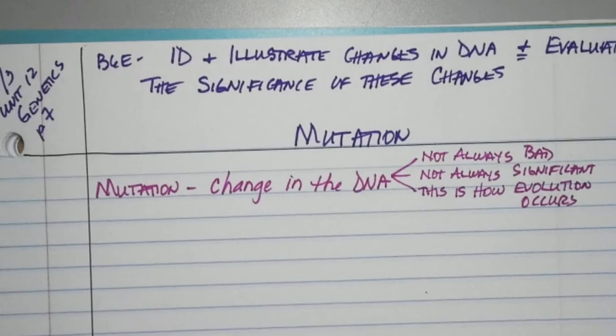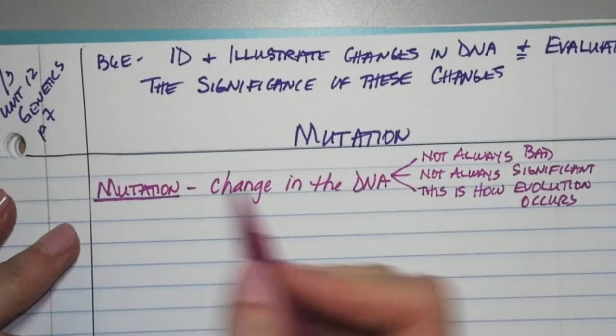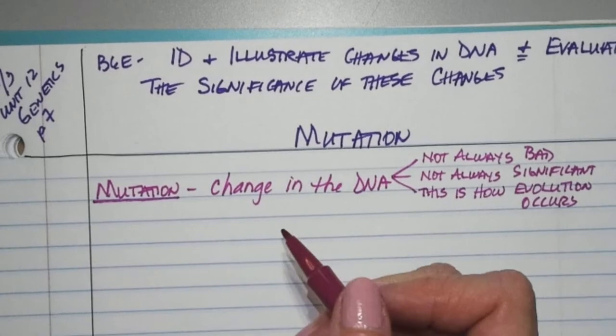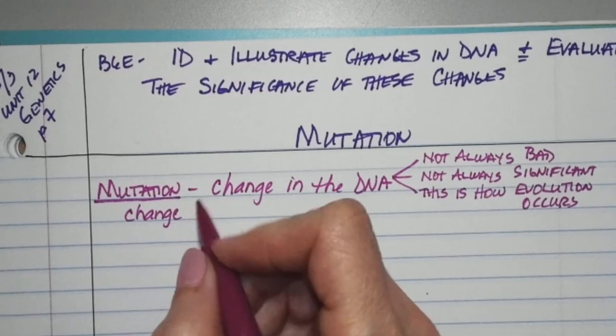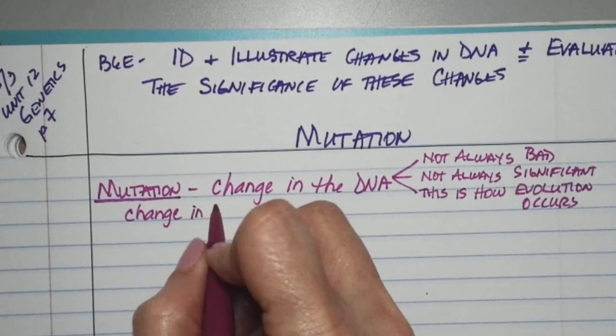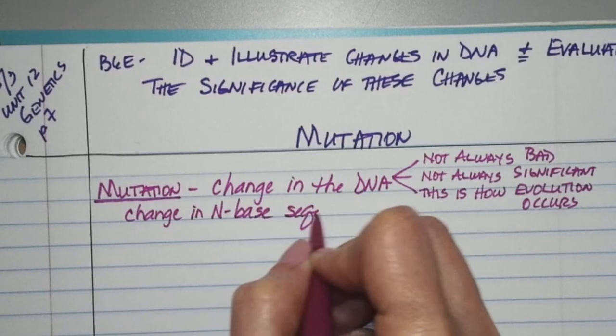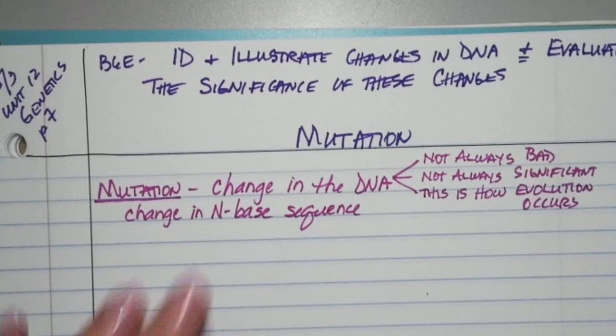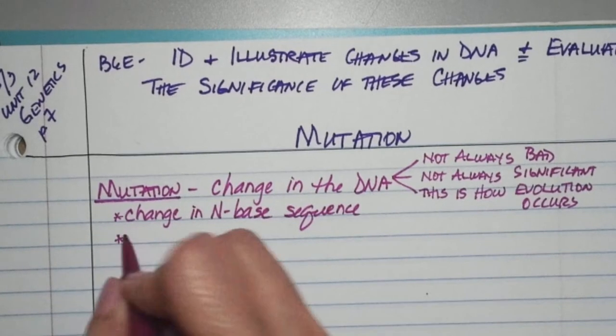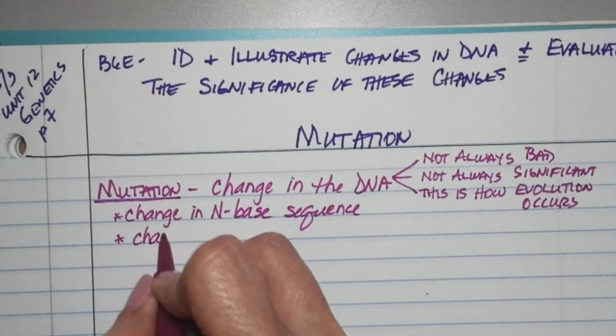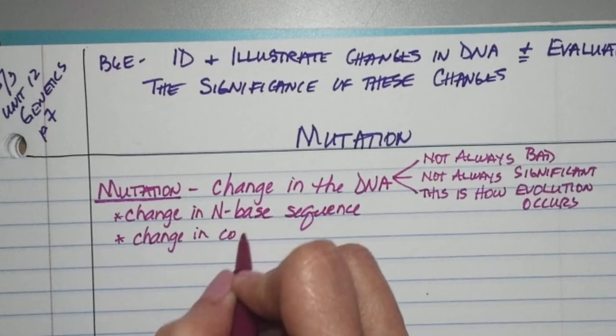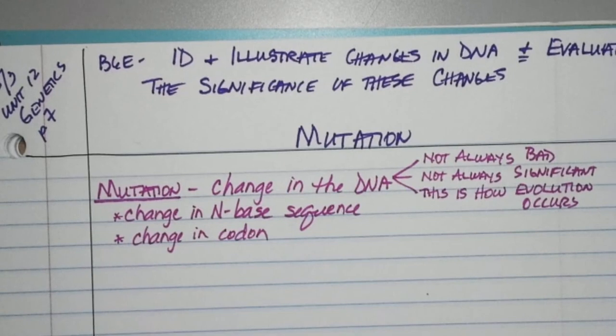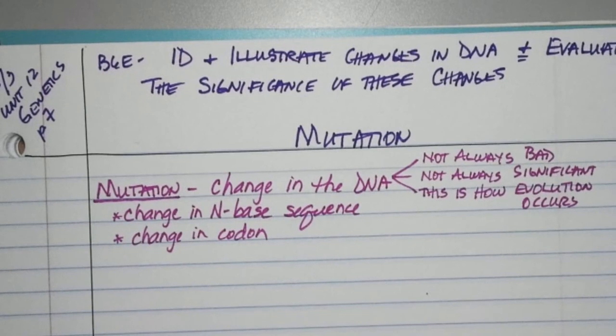When we talk about mutation, I'm going to be a little bit more specific. We can think of it as a change in the nitrogen base sequence. Remember, that's how information for making your traits is carried. You can even think of it as a change in the codon. Every three letters of codon codes for one amino acid. So if we change the letters, we possibly change what amino acid fits there.